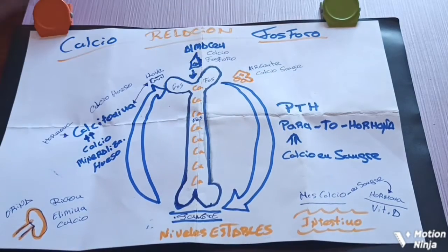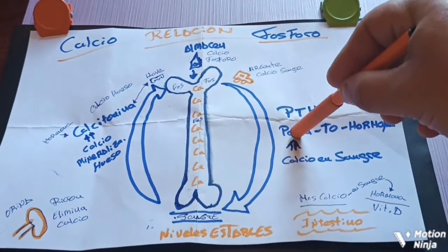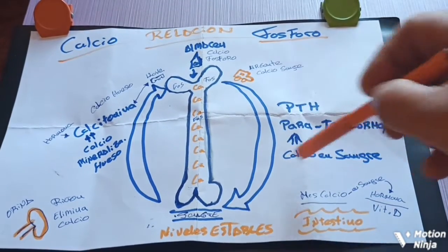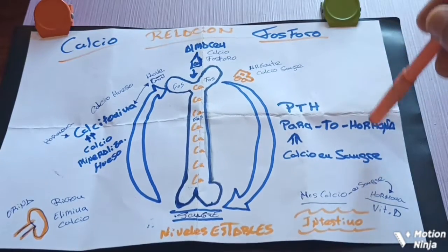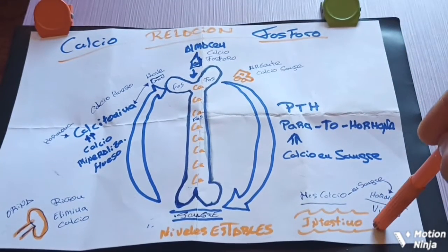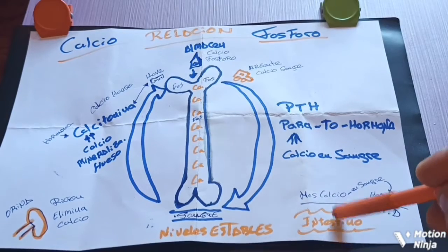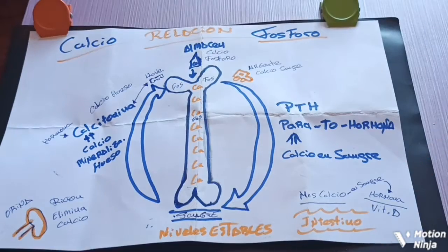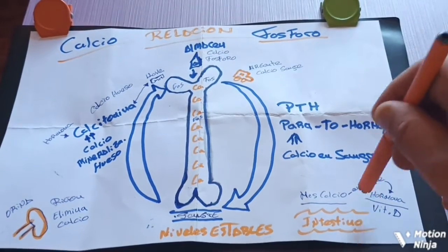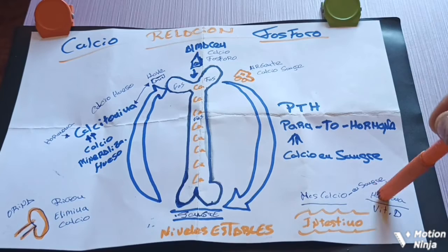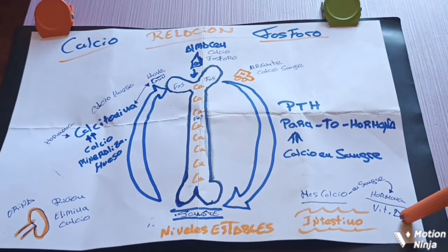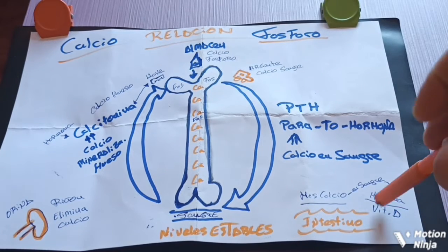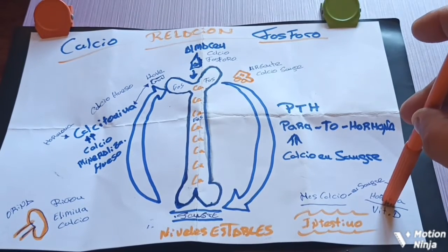Al mismo tiempo, cuando bajan los niveles de calcio en sangre, aparte de actuar la paratormona, también actúa en el intestino la hormona llamada vitamina D, que es la encargada de mandar más calcio a la sangre. La vitamina D nos hace ver lo importante que son los productos naturales, no químicos.